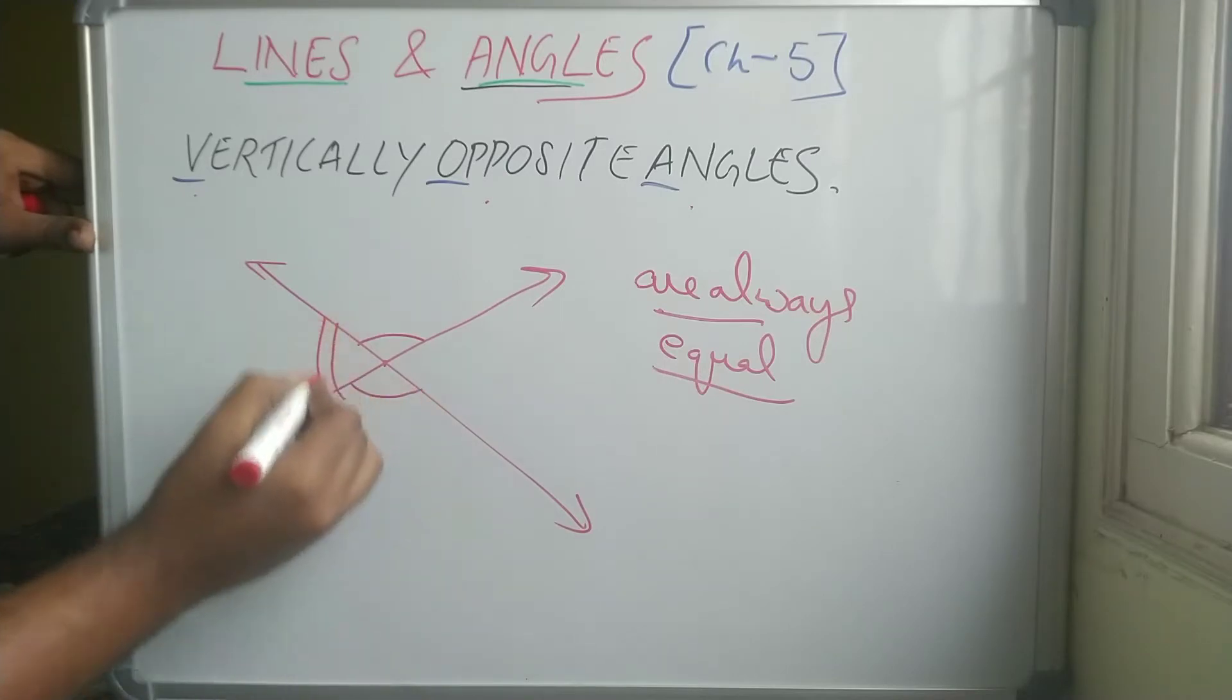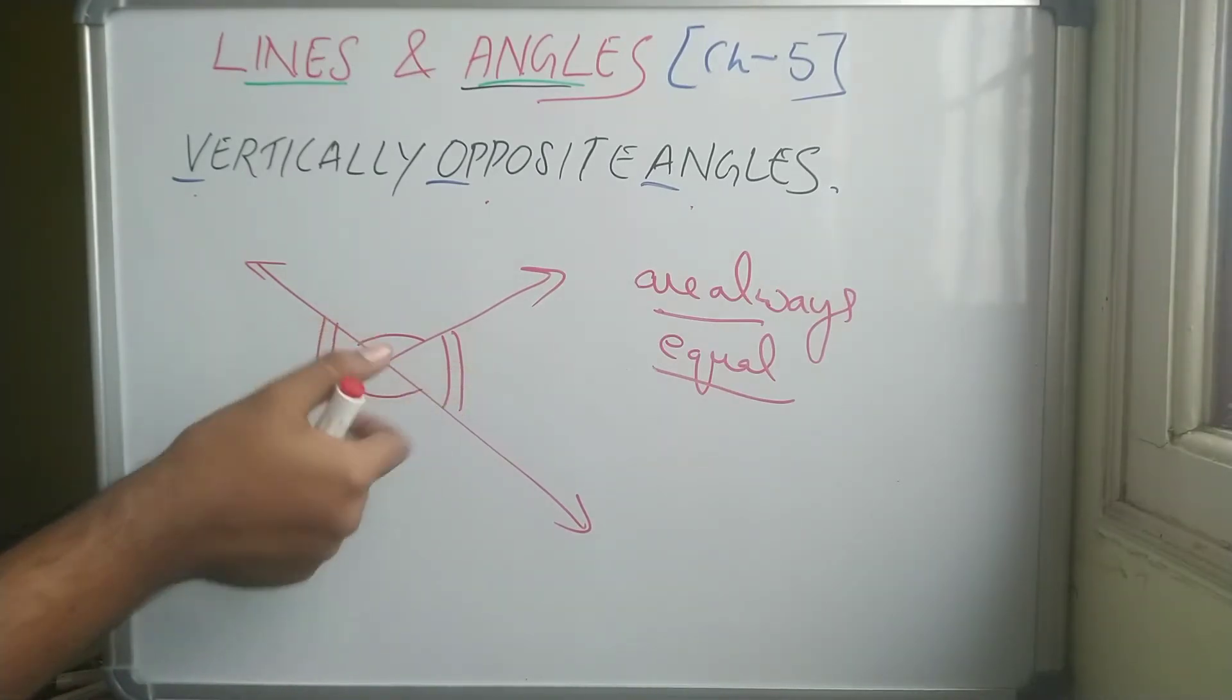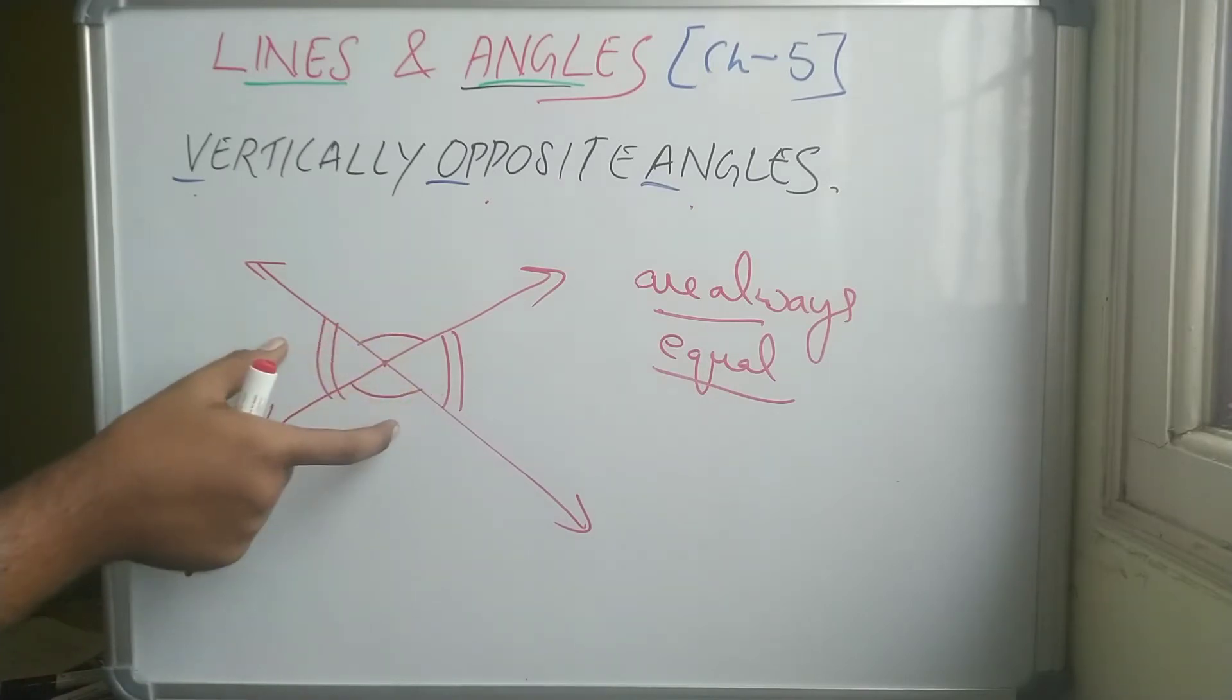So we can represent this as... Why I have drawn here two, two. This thing. See, this indicates that these two angles are equal. And these two angles are... But these two angles are not equal. Because you have to understand. Okay.